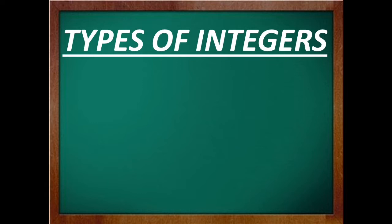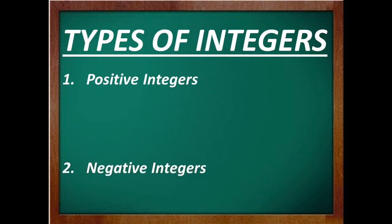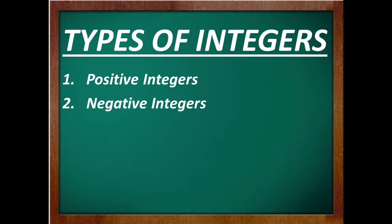Basically there are three types of integers. The first is positive integers — all the natural numbers are positive integers. The second is negative integers — all the numbers having a minus sign with them are known as negative integers. For example: minus 1, minus 2, minus 3, and so on.